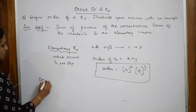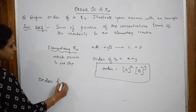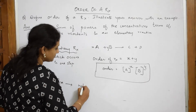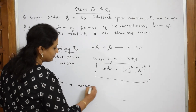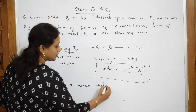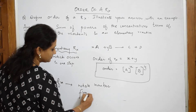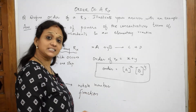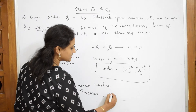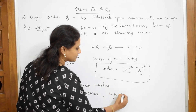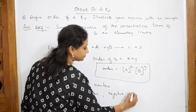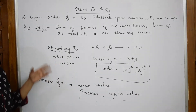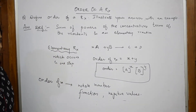Now, your order of the reaction can give you an answer that can be a whole number, it can be a fraction, and you will also get negative values. We will be doing some sums involving negative values as well.